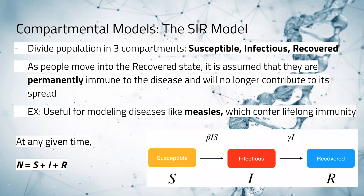In this presentation, we will mostly talk about compartmental models. The first model we'll discuss is the SIR model. This model divides the population into three compartments: susceptible, infectious, and recovered. Individuals migrate between susceptible, infectious, and recovered. As they move into the recovered state, it is assumed that they are permanently immune to the disease and will no longer contribute to its spread. Sometimes the recovered group is called 'removed' because people who die could also be put in this category, since they also no longer contribute to its spread.